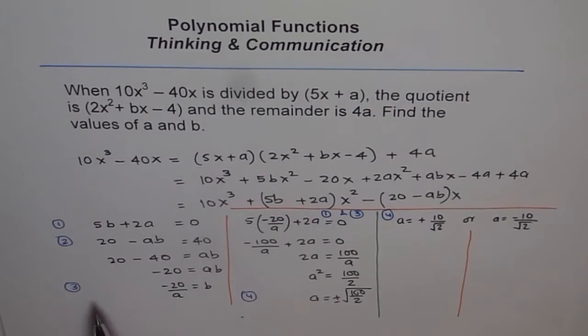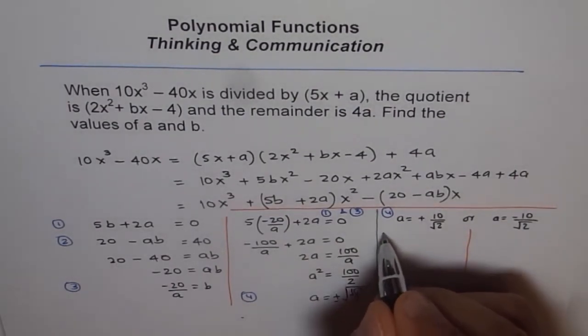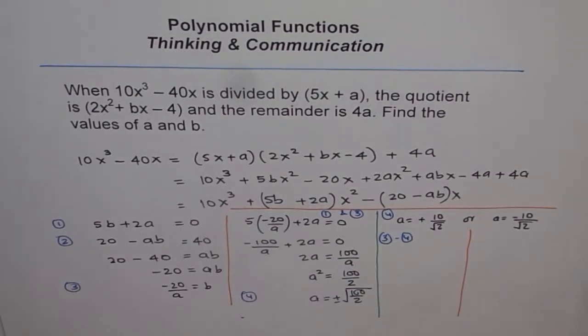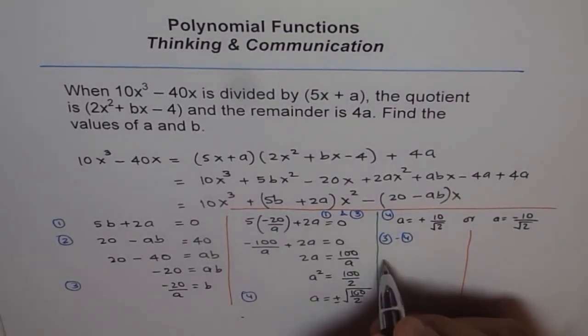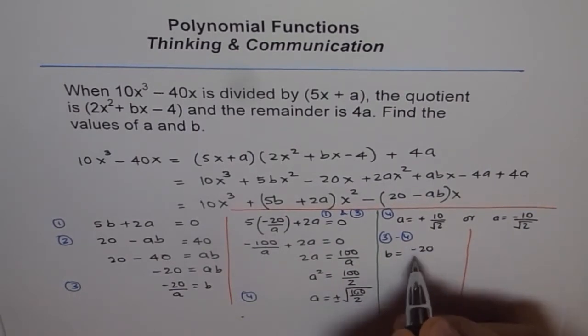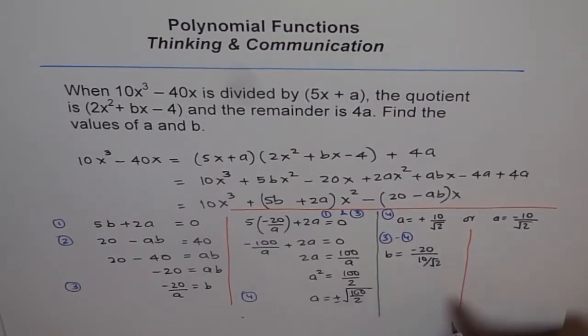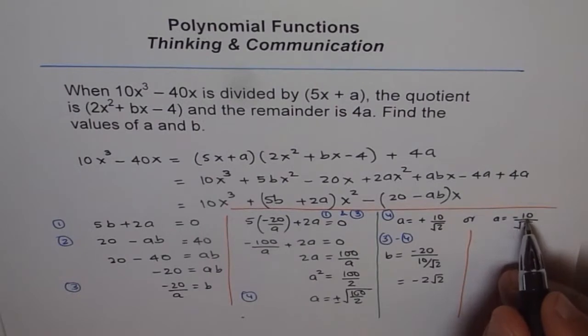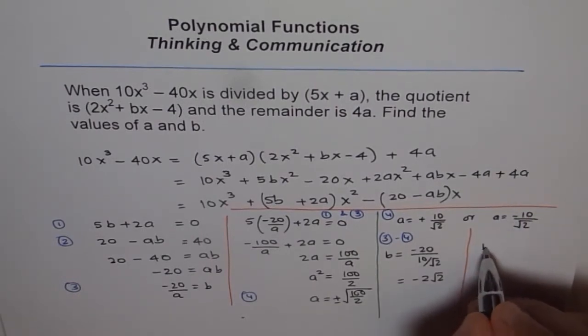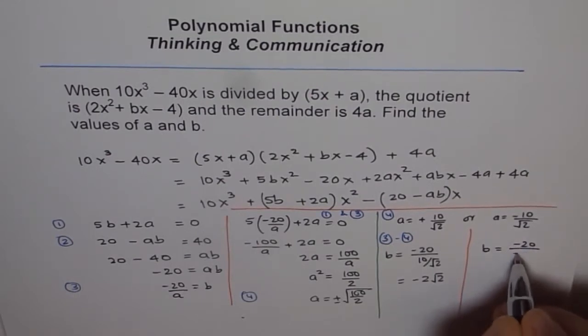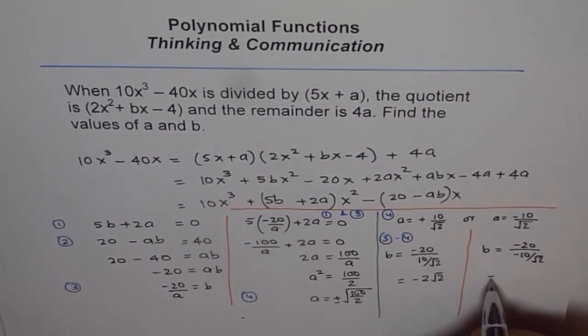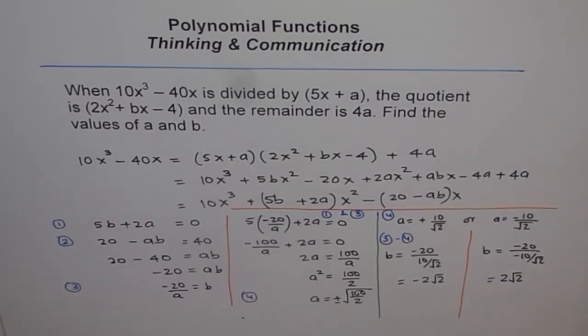So from 3 and 4, let's find what b is. So b is equal to minus 20 over a. So instead of a, I'll write 10 over square root 2, which gives me minus 2√2. That's one value of b. The other value of b is when I take a as minus 10 over square root 2. So I get b as minus 20 over minus 10 over square root 2. From here, minus minus cancels out. So I get 2√2. So these are my two values of a and b.